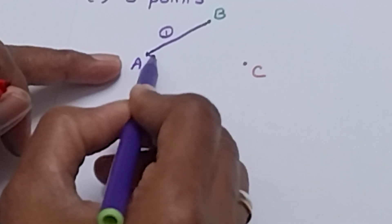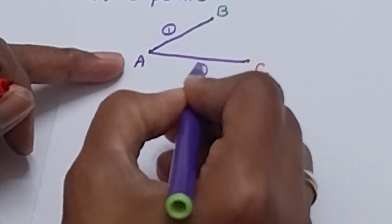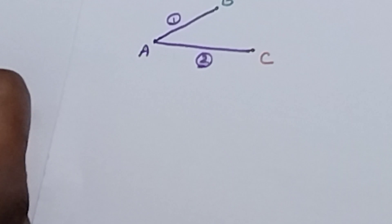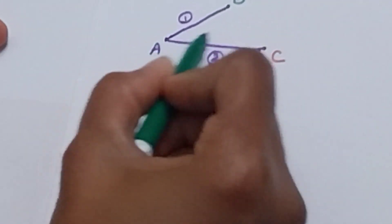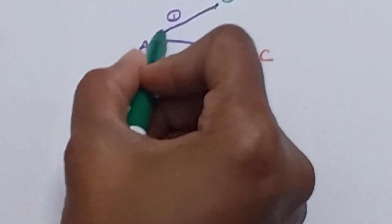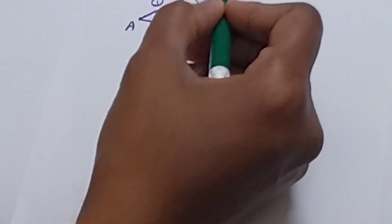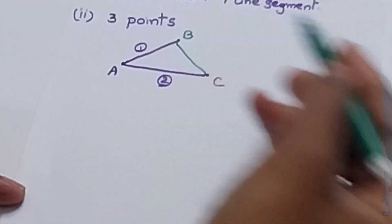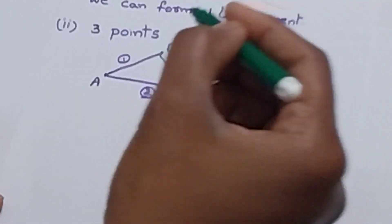From A, I am connecting C — this is the second line segment. Now A is connected with 2 points. I try to connect B with A and C. B to A — a line segment is already there, so we ignore it. From B to C — this is a new line segment, so we count it as 3.